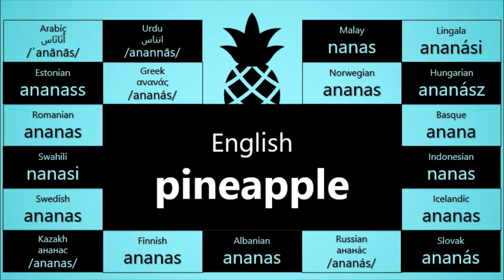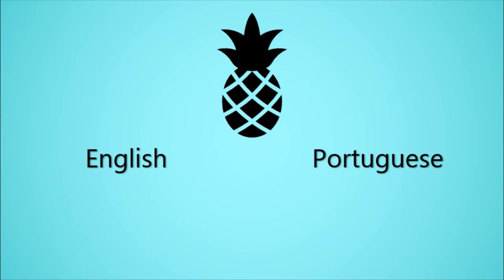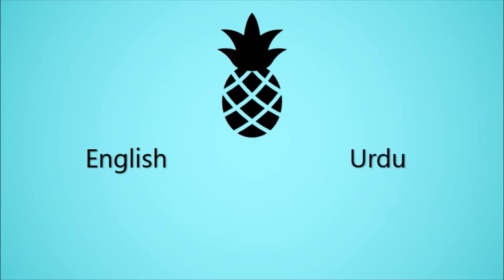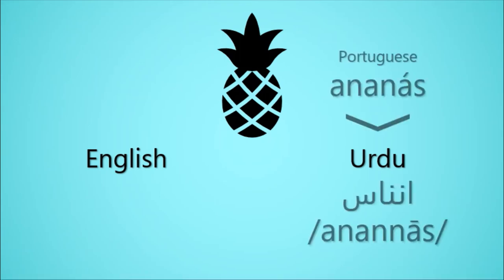So what about English? How did it end up with the word pineapple? Well, let's compare English to some other languages to understand what happened. When Portuguese speakers first encountered this fruit, they had no word for it, so they took their word from what they heard in a Tupian language such as Old Tupí. Similarly, when Urdu speakers first encountered the fruit and had no word for it, they took their word from what they heard in Portuguese. But when English speakers first encountered this fruit, they took a different approach. Instead of creating a new word to describe this fruit, they just used a word that already existed in the English vocabulary – the word pineapple.